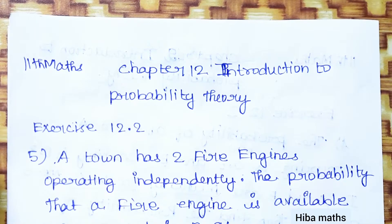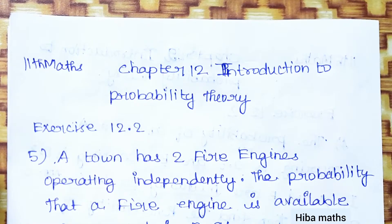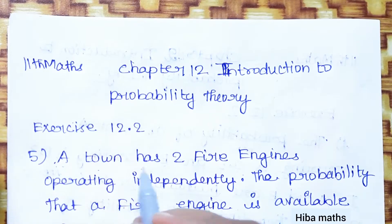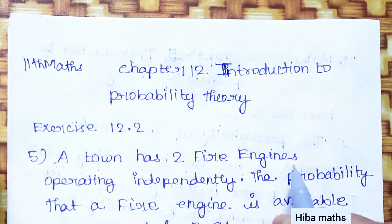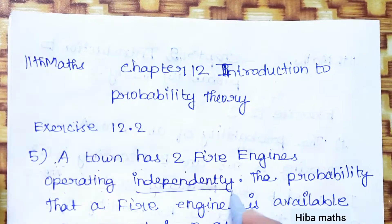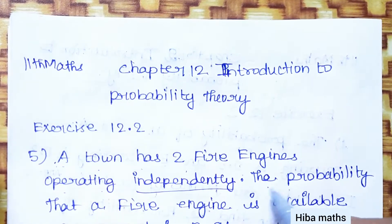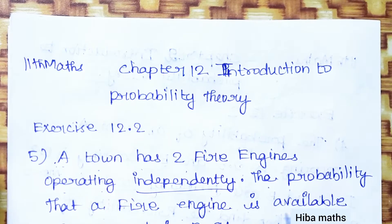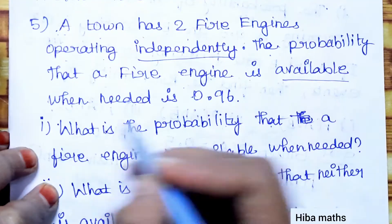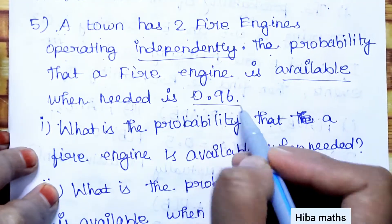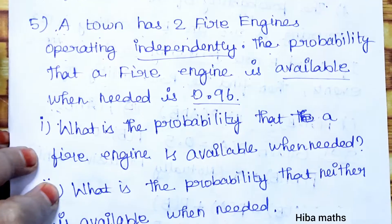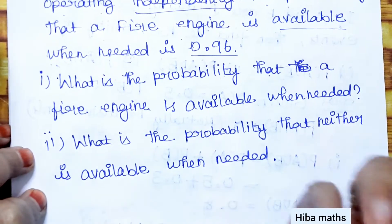Hello students, welcome to Hypermax 11 Standard Max Chapter 12, Introduction to Probability Theory. Exercise 12.12, 5th question. A town has two fire engines operating independently. The probability that a fire engine is available when needed is 0.96.